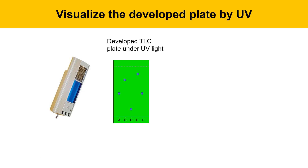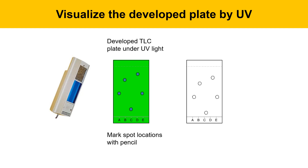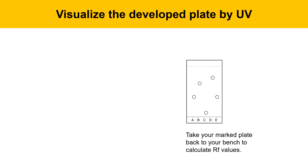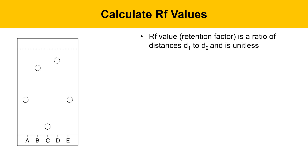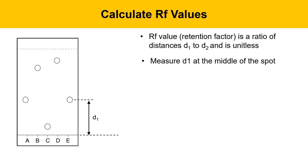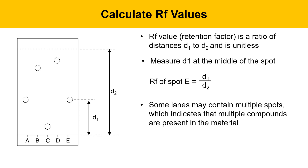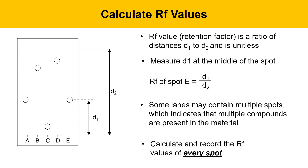Visualize the plate under UV light — shine a UV lamp on the plate to see the location of the spots, then mark those locations in pencil. Remember the UV lamp is hazardous to tissue, so wear gloves when handling the plate under UV light. Then calculate RF values (retention factors). The RF value is a unitless ratio of two distances, D1 and D2. D1 is the distance the spot travels from the baseline, measured to the middle of the spot. D2 is the distance the solvent front traveled from where the spot started. The RF value equals D1 divided by D2. Use the same units for both measurements so they cancel out. Some lanes may contain multiple spots, indicating multiple compounds are present — calculate and record the RF value of every spot in each lane.